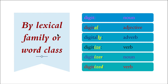Next, we can learn words by lexical family or word class. Lexical family refers to words coming from the same family or the same word class — like noun, adjective, verb, etc. For example, 'digit' is a noun. We can change this word into another grammatical category.